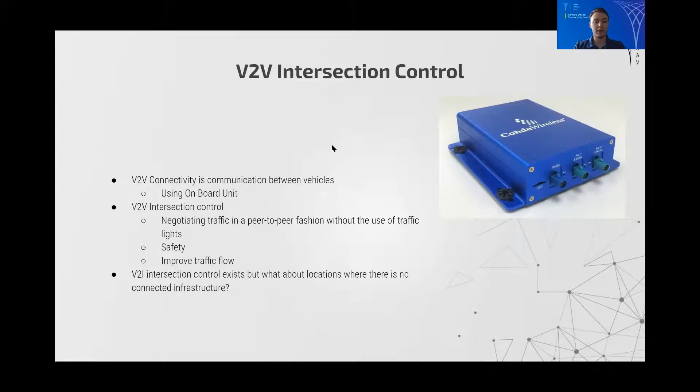V2I which is Vehicle to Infrastructure Intersection Control such as traffic lights exist already, but what about locations where there is no connected infrastructure? This is mainly where we'd anticipate the V2V Intersection Control Algorithm being used.